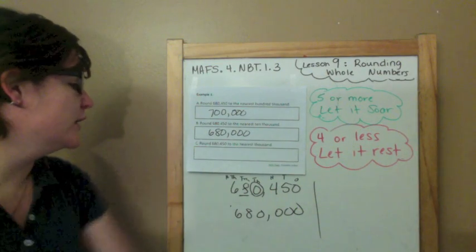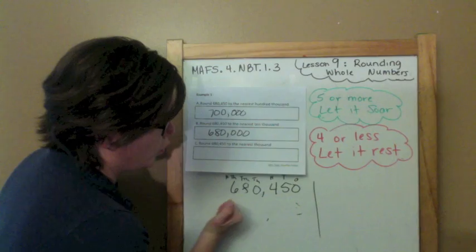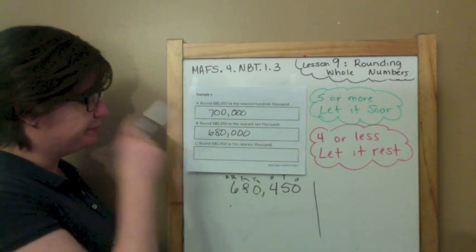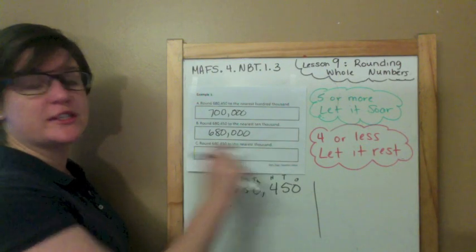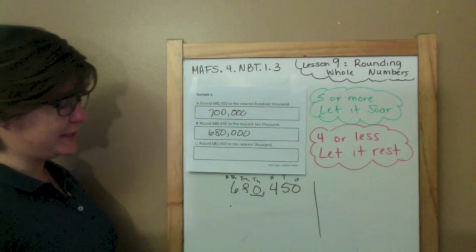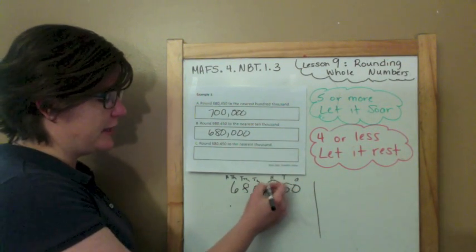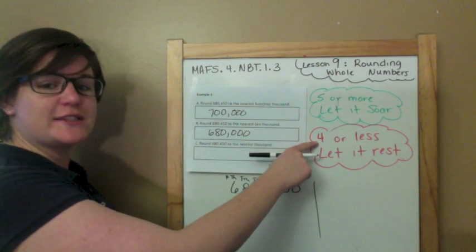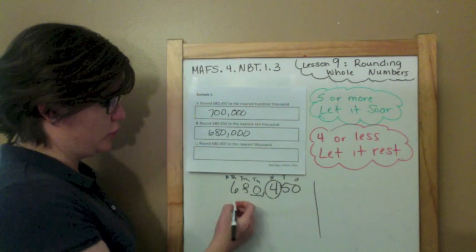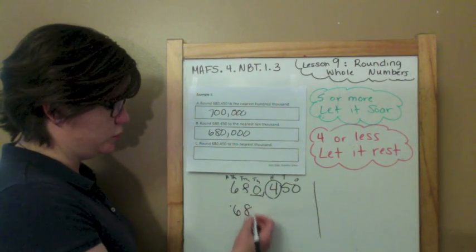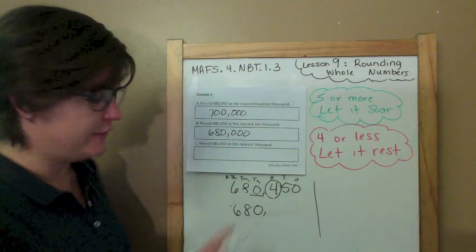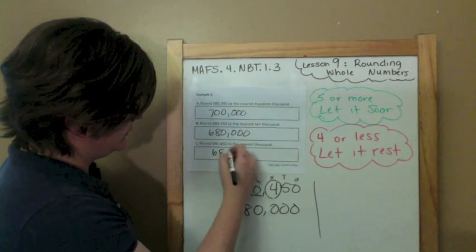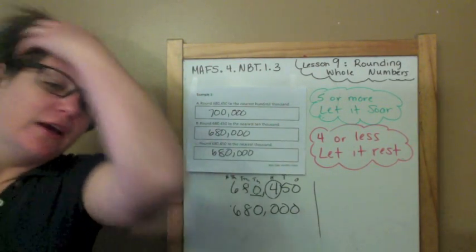Now we're on part C with the same number. Round 680,450 to the nearest thousand. Find and underline the thousands place. Spotlight to the right — decide the digit's fate. This is four, so we're in the four or less, you better let it rest, meaning we let the zero rest. These digits come down, and after the underlined place, everything else becomes zeros.